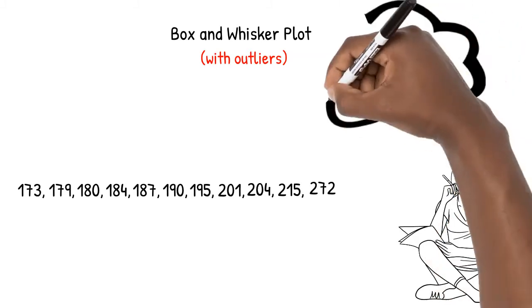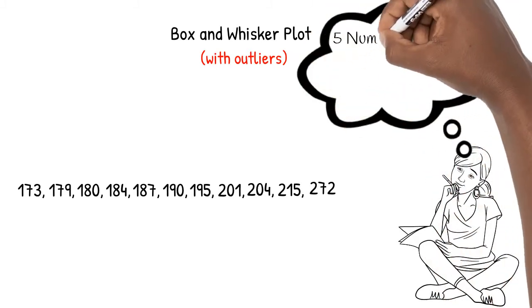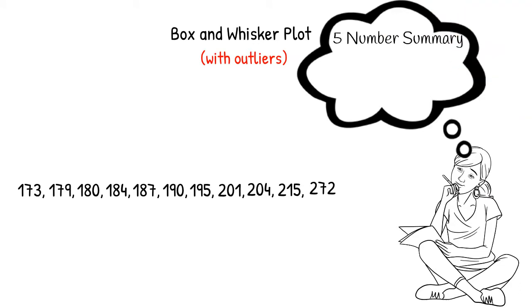In some of our previous videos, recall that we looked at how to determine a five-number summary using the weights of a group of men. We'll need these values for our box and whisker, so let's do a quick review.